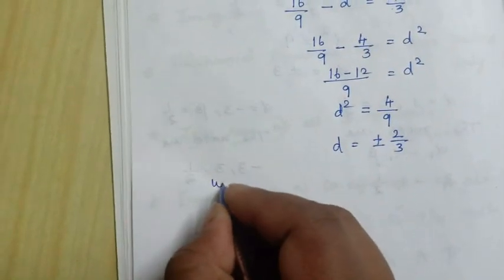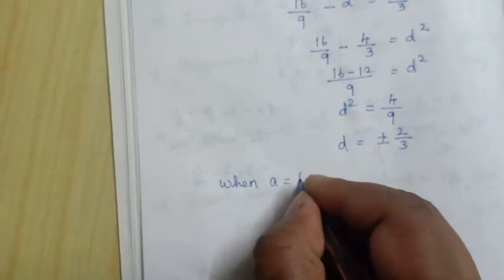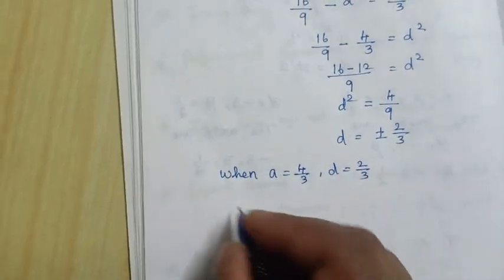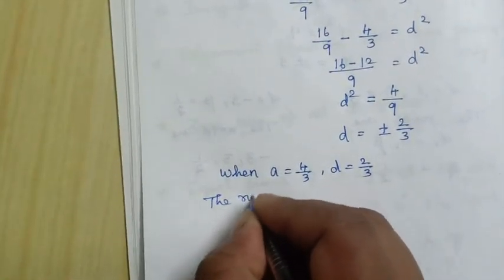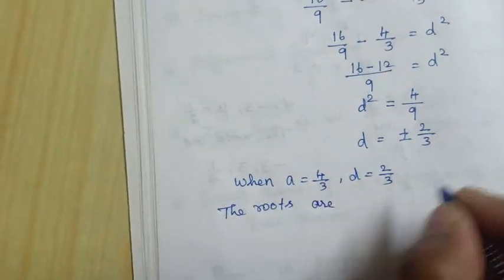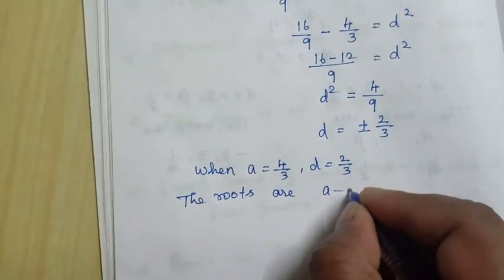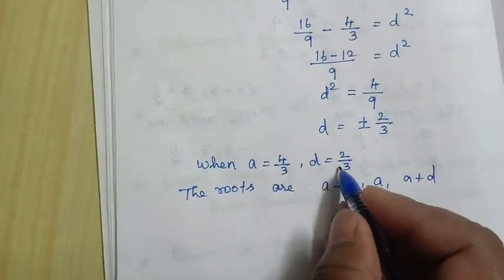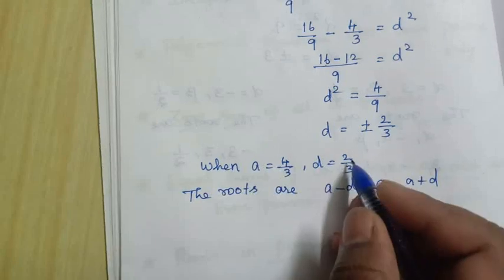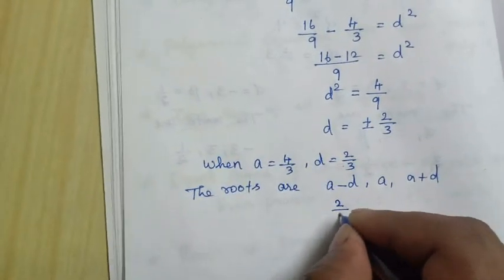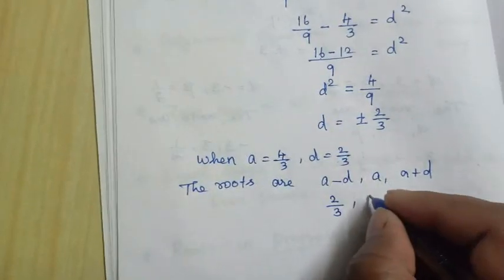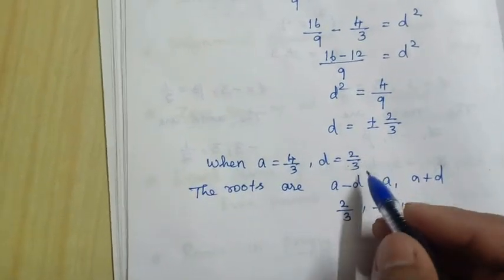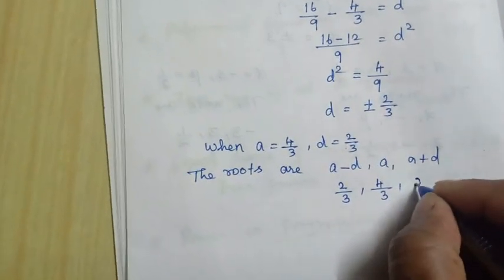When a equals 4 by 3 and d equals 2 by 3, the roots are: a minus d equals 4 by 3 minus 2 by 3 equals 2 by 3; a equals 4 by 3; and a plus d equals 4 by 3 plus 2 by 3 equals 6 by 3, which equals 2.